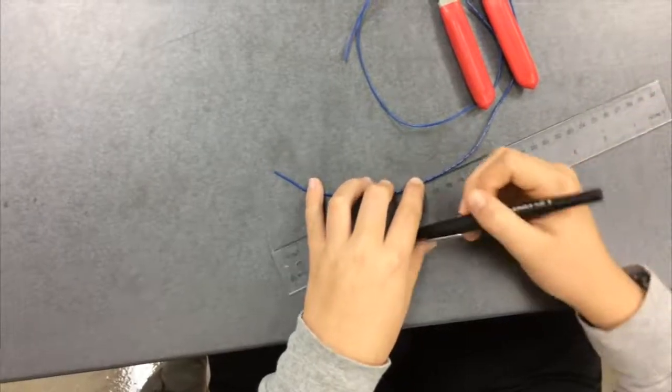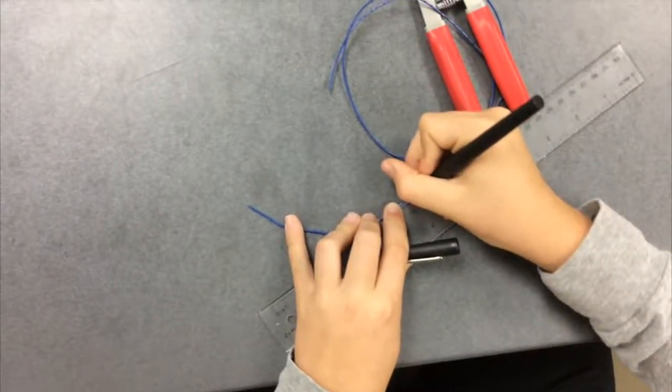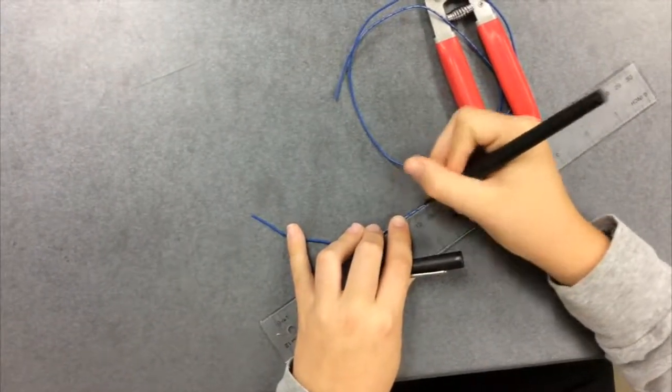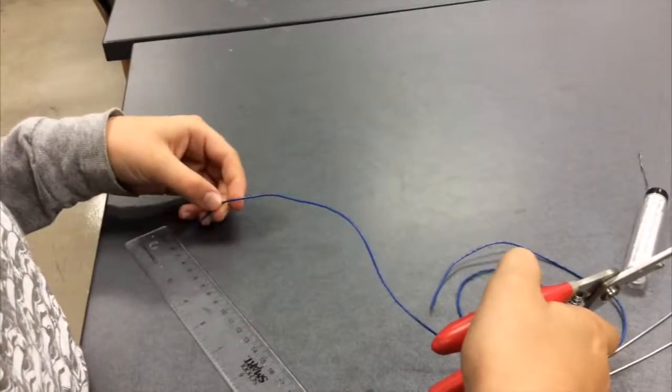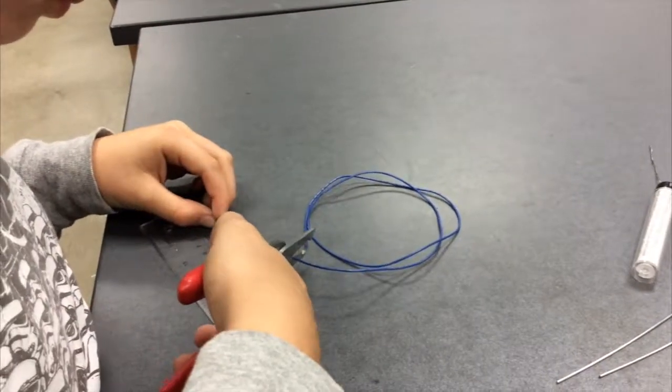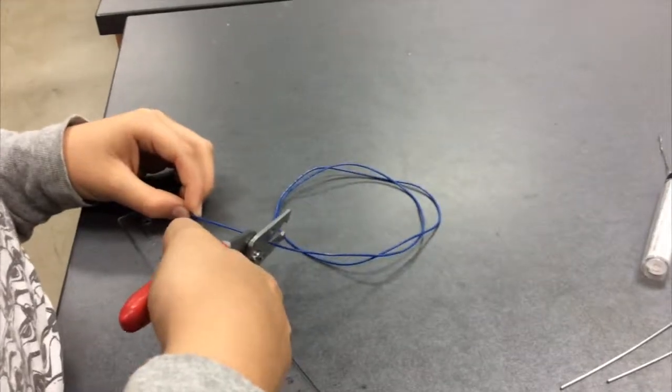Next, measure out and cut all the different wires to their appropriate lengths. The measurements don't have to be exact, but they just have to be close enough to connect the different parts of the butterfly.